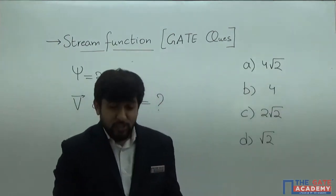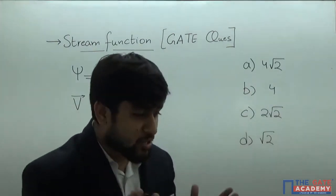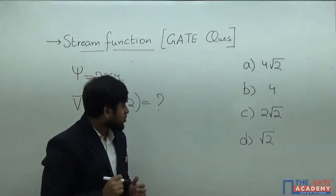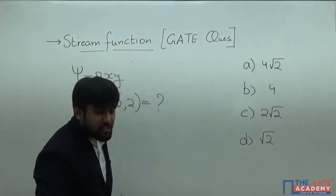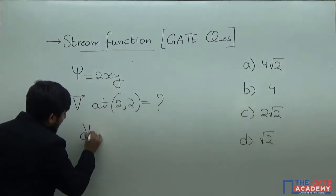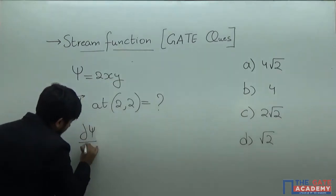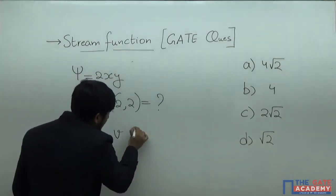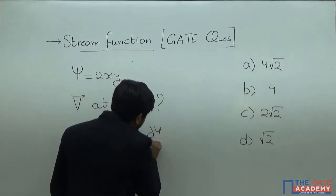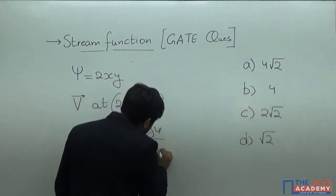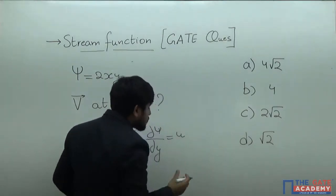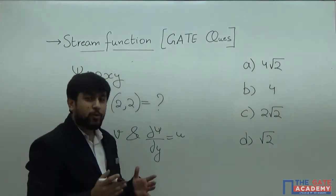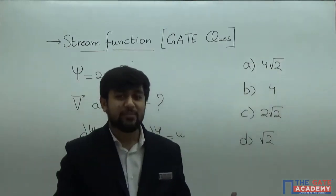This question can be solved by the definition of stream function only. If you remember, the stream function is a scalar function such that del psi by del x is equal to negative of v, and del psi by del y is equal to u, where u and v are the velocity components along the x and y directions.